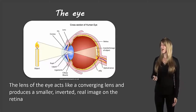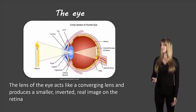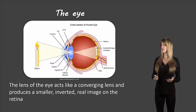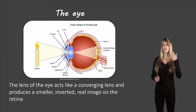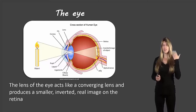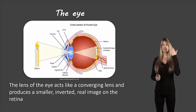The lens of the eye acts like a converging lens and it produces a smaller inverted real image on the retina, which is at the back of the eyeball. This is what's needed for us to see properly.